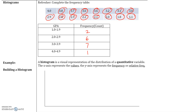From this, we're going to build a histogram. A histogram is a visual representation of the distribution of a quantitative variable. The x-axis represents the values — so in this case, the values are the GPA, and that is going to be your x-axis. The y-axis always represents the frequency or relative frequency, so in this case, the frequency will be the y-axis. Let's label our x-axis as GPA and our y-axis as frequency.